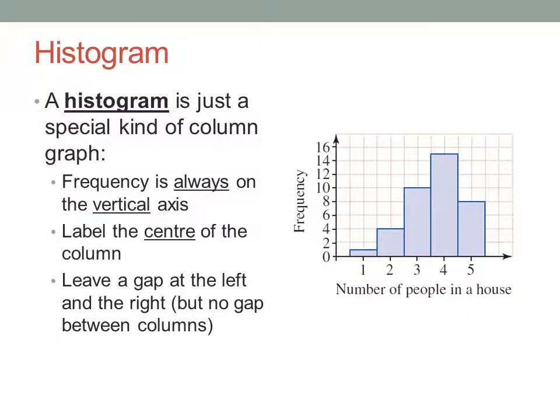A histogram is just a special kind of column graph for displaying certain kinds of data. A histogram has the different data values on the horizontal axis, and the frequency always goes on the vertical axis.